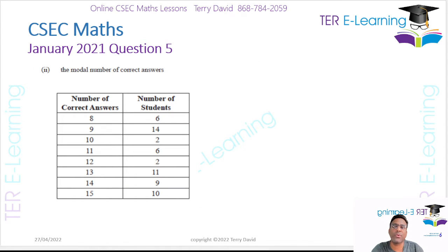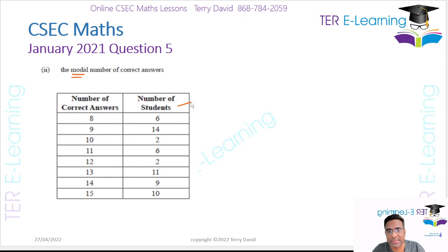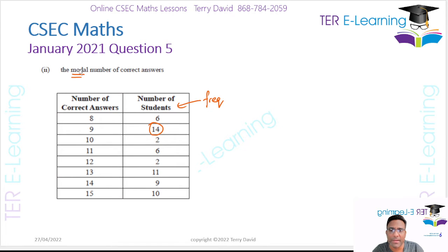The next thing we want is the modal number of correct answers. The mode is the value that corresponds to the highest frequency. Looking at the numbers, our highest frequency is 14. So the modal number of correct answers is 9 — meaning most students got 9 correct answers.